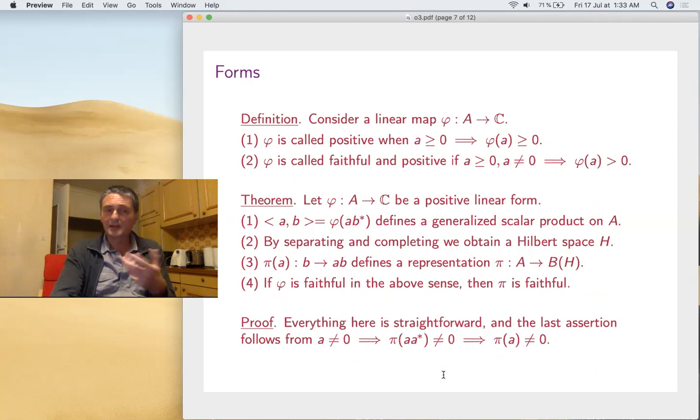So now this was positivity for elements. Now we need to talk about linear forms, the analogs of the integration functionals that we need for our construction. Consider a linear map. We call it positive if we map positives to positives, and faithful positive if this is true. We have analogs of positive measures and faithful positive measures. With this, we can exactly do the left regular representation. I can define an inner product just like this, separate, complete it to a Hilbert space. That's the L² space. Then you get a representation, and if it's faithful in this technical sense, it's faithful.